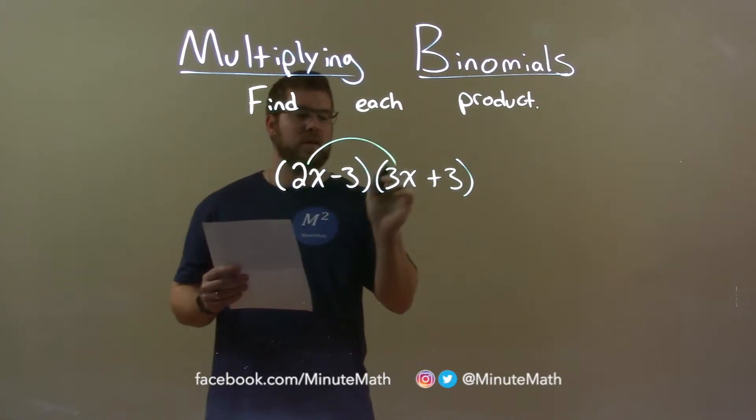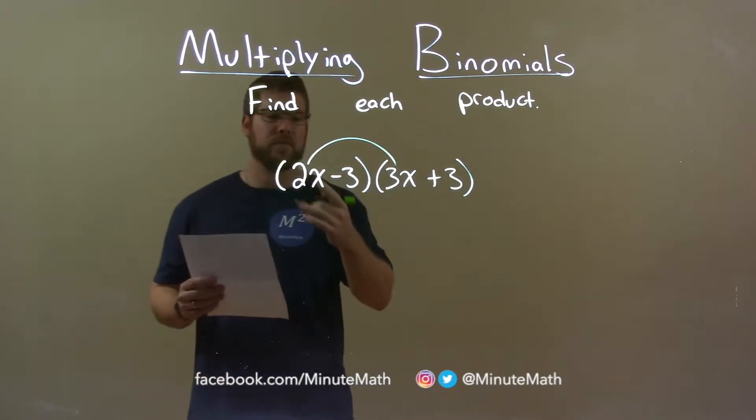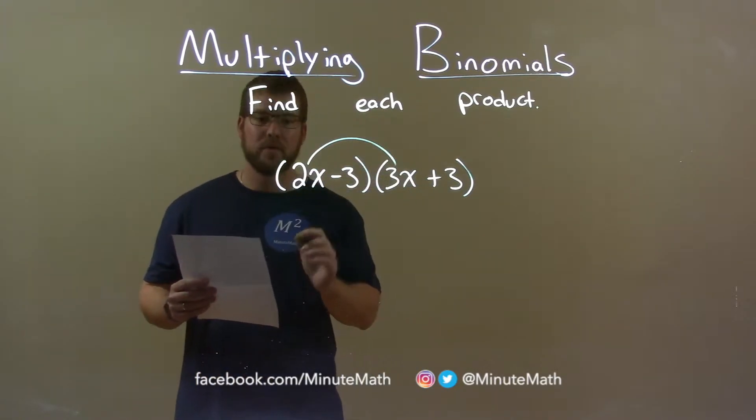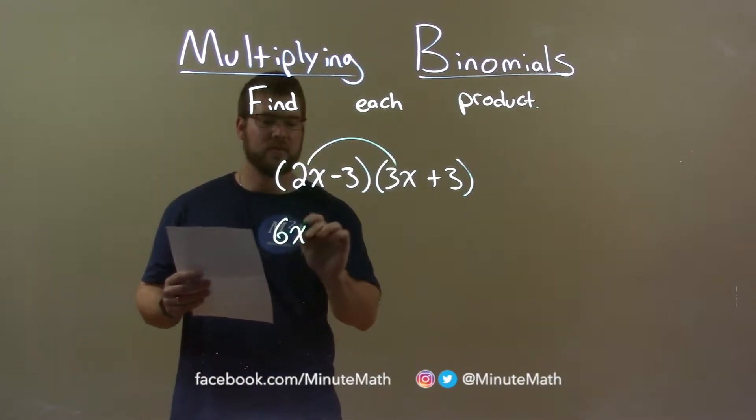We take the 2x and multiply it by the 3x. 2x times 3x is 6x squared.